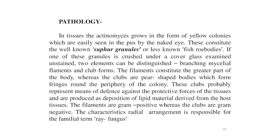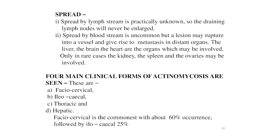Pathology of actinomycosis: in tissues, actinomycosis grows in the form of yellow colonies, easily seen in pus by the naked eye — these constitute the well-known sulfur granules or Drusen bodies. If one granule is crushed and examined unstained, two elements are distinguished: branching mycelial filaments and club forms. The filaments constitute the greater part of the body; the clubs are pear-shaped bodies forming a ring around the periphery of the colony, probably representing defense against host tissues, produced as deposition of lipid material from the host. The filaments are gram-positive; the clubs are gram-negative.